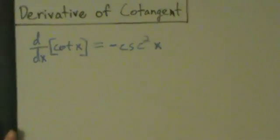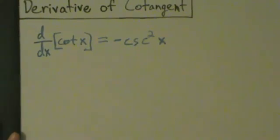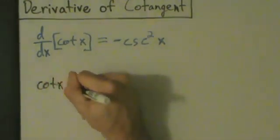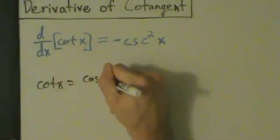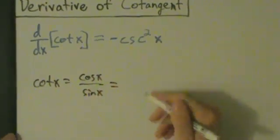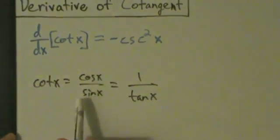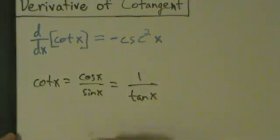But anyway, let's go ahead and see how this is true. So there are actually two different ways we can approach this. We could use the fact that cotangent of x equals cosine of x over sine of x, or we could use the fact that it equals 1 over tangent of x. So if we do it like cosine over sine, then it's going to be pretty similar to the proof for tangent.